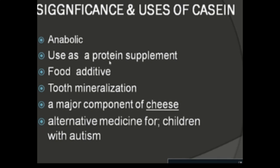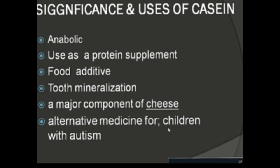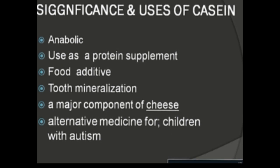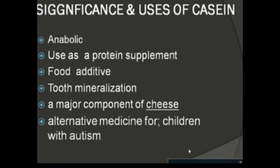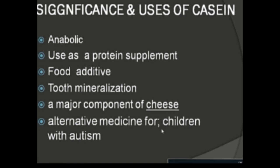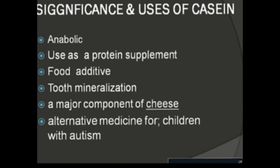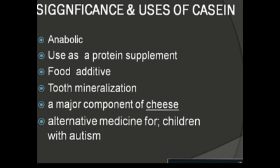As a rich source of essential amino acids, casein is used as a protein supplement and food additive. Casein-derived compounds are used in tooth remineralization products to stabilize amorphous calcium phosphate and release ACP on the tooth surface to facilitate remineralization. Furthermore, it is an important component in cheese making. One study has proposed that it may serve as an alternative medicine for children with autism, as such diets have shown good effects on behaviour and cognitive and social functioning.